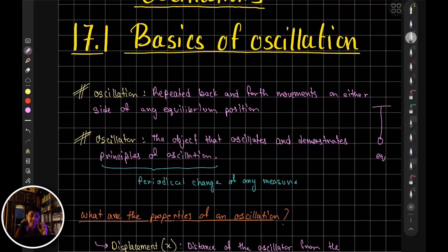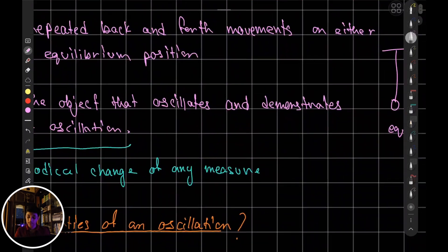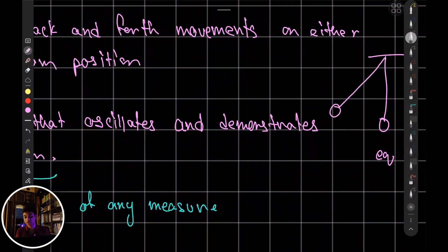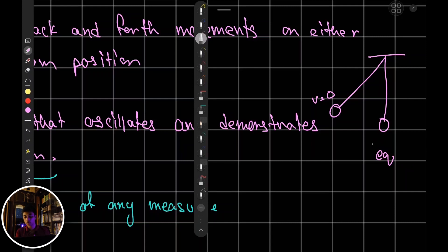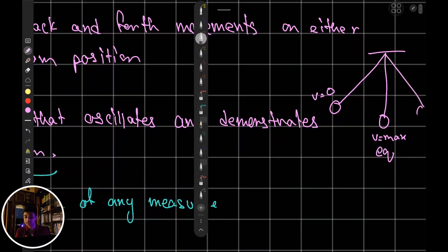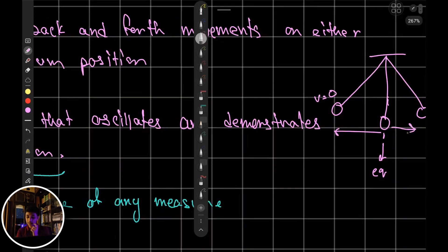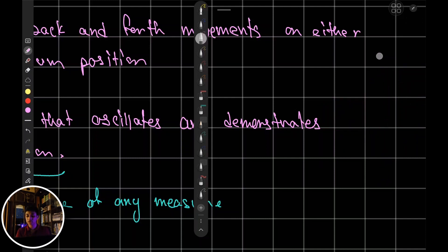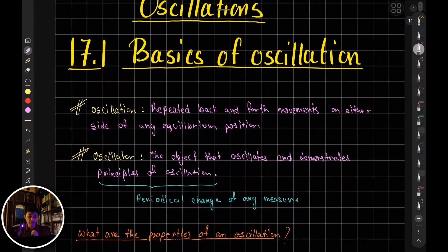At the equilibrium position, the bob has maximum velocity. If you release the bob, it will have velocity zero when it reaches the extreme positions, and v-max at the middle because it has maximum kinetic energy there. The middle ground is the equilibrium where displacement is zero, and displacement is maximum at either extreme.